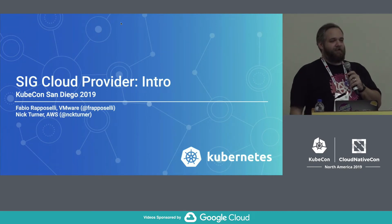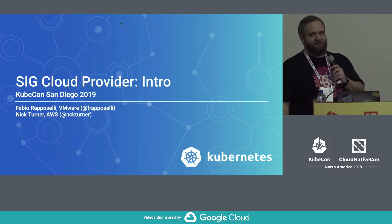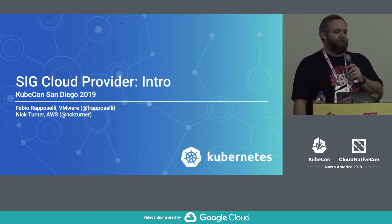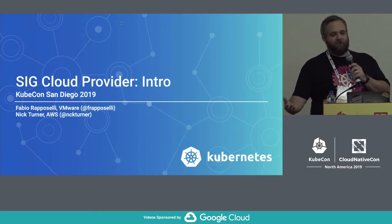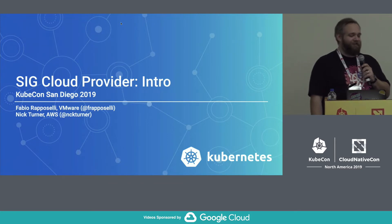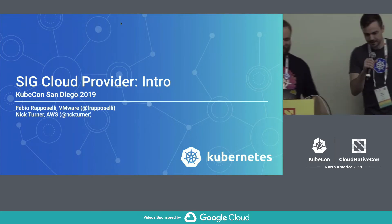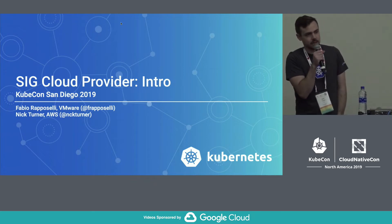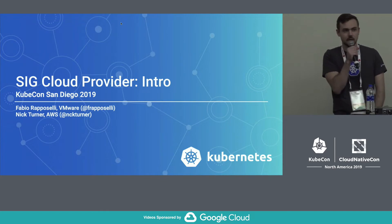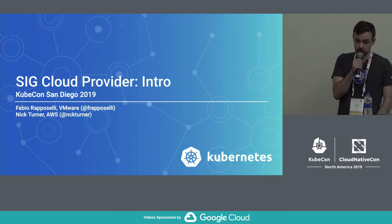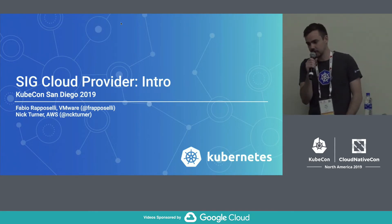We're going to be your lovely hosts for today. My name is Fabio Rapacelli. I work for VMware. I've been working on Kubernetes for the past four or five years, working mostly upstream. You probably saw some of my PRs on vSphere — if you use vSphere, there's a pretty good chance I wrote some of the code. And with me is Nick Turner from Amazon. My name is Nick Turner. I work at AWS on EKS. Before that, I worked at a couple of startups in Seattle and was a user of Kubernetes. And now I am a cloud provider, I guess.